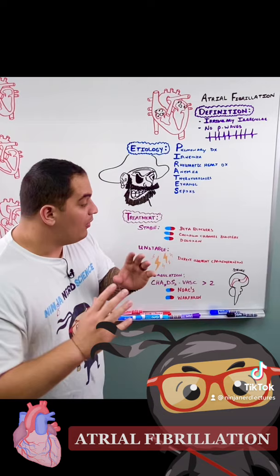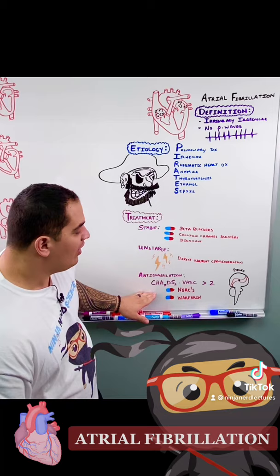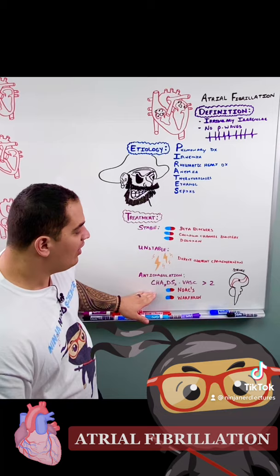Most importantly is long-term treatment to prevent the risk of stroke. You have to utilize the CHADS-VASC score. If it's greater than 2, you can treat them with a NOAC or warfarin. But if they have a valvular disease, it's warfarin.